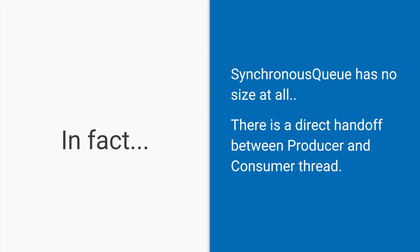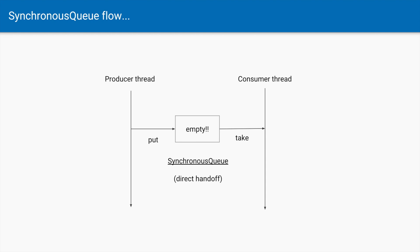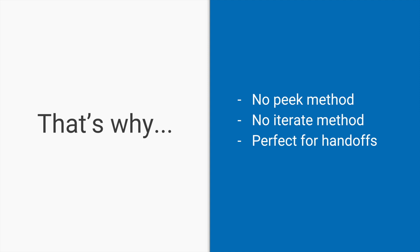In fact, synchronous queue has no size at all. It is not even of size one, because it doesn't need to hold the element — the producer requires the consumer thread to be available at that particular point in time. There can be a direct handoff: the producer can directly give the element to the consumer without storing it. As soon as a producer calls put and a consumer is available to call take, there is no need to store the element — the producer directly hands it over. That is why synchronous queue has no peek method, since there is no element to peek at, and you cannot iterate over it.